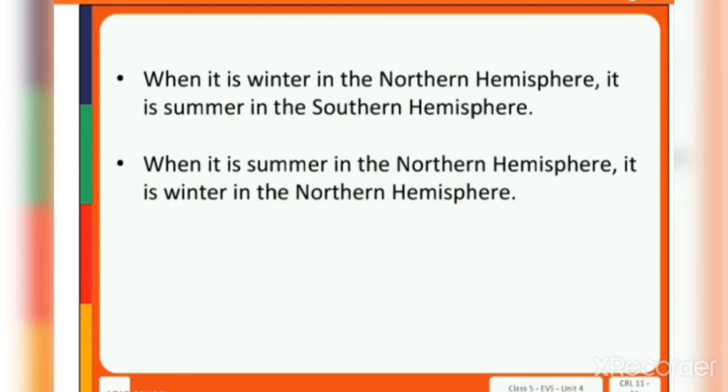When it is winter in the Northern Hemisphere, it is summer in the Southern Hemisphere. When it is summer in the Northern Hemisphere, it is winter in the Southern Hemisphere. So we can say that the two hemispheres have opposite seasons — one hemisphere is closer to the sun and receives more light, and the other receives less sunlight, so one has summer and the other has winter.